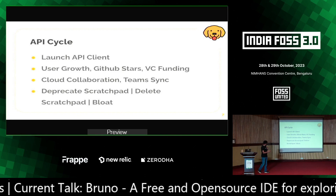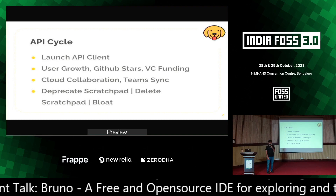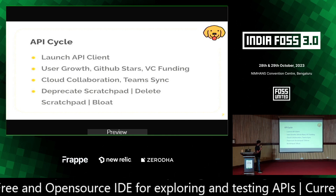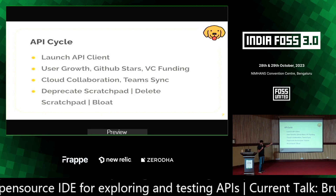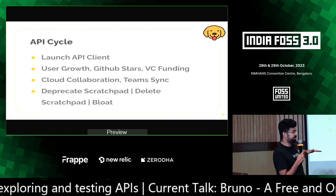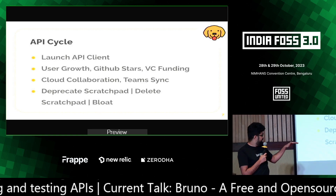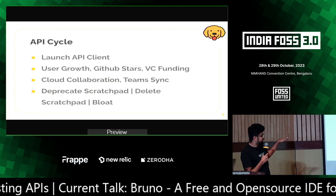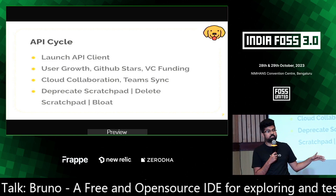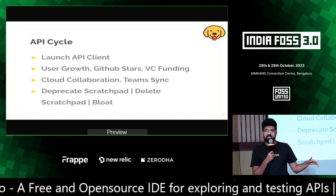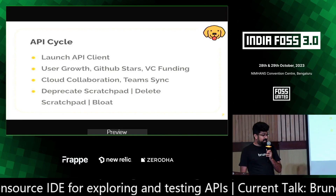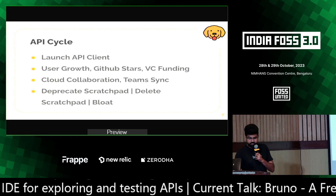Let's talk about API clients. Postman is the OG of API clients, who started this journey in 2015. Every API client that comes after — Insomnia and others — follows this playbook: you launch, get user growth, get GitHub stars, then VC funding, then cloud collaboration, team sync, and finally you deprecate and delete your scratchpad and force everyone to use a cloud account. That's what happened on September 28th. Insomnia and Postman forced their users to go cloud or nothing. Developers got pissed off, started looking for alternatives, and that's when Bruno got the visibility. Bloat is one of the things seen in every API client out there.